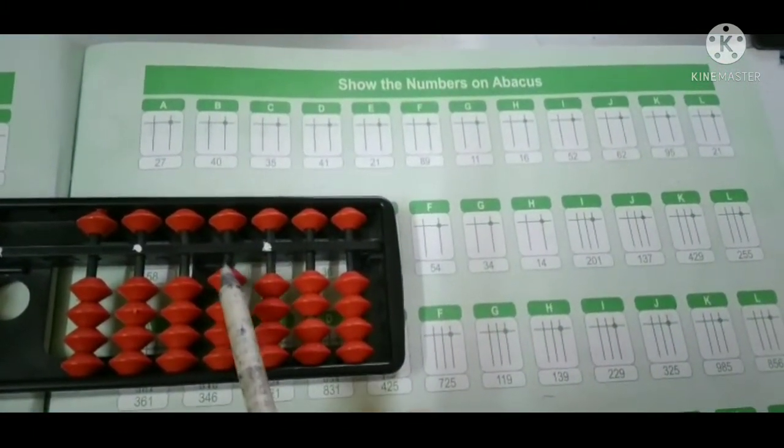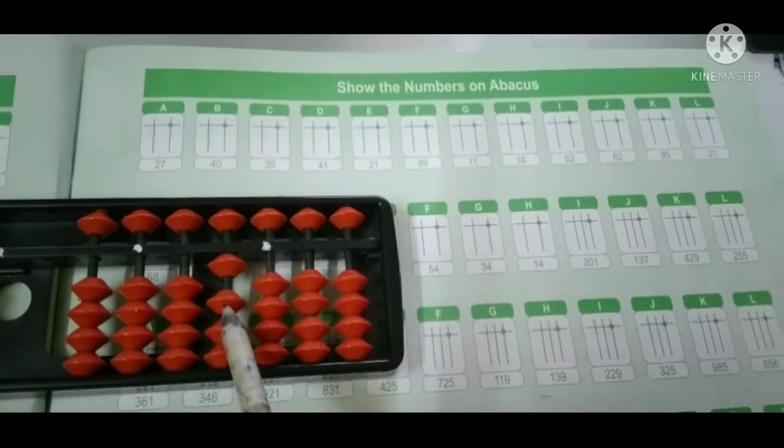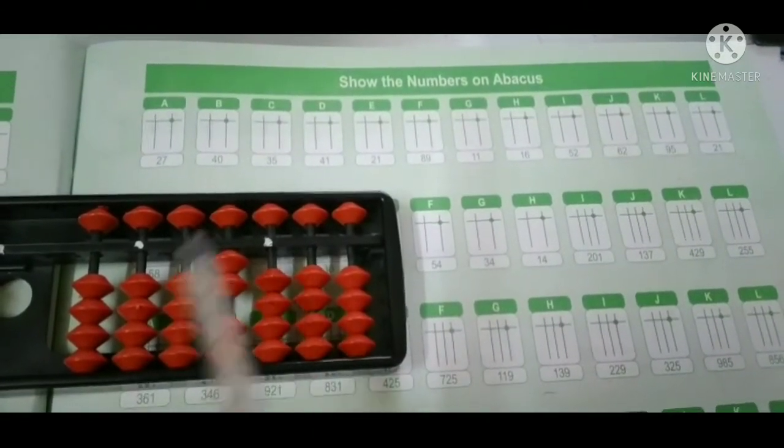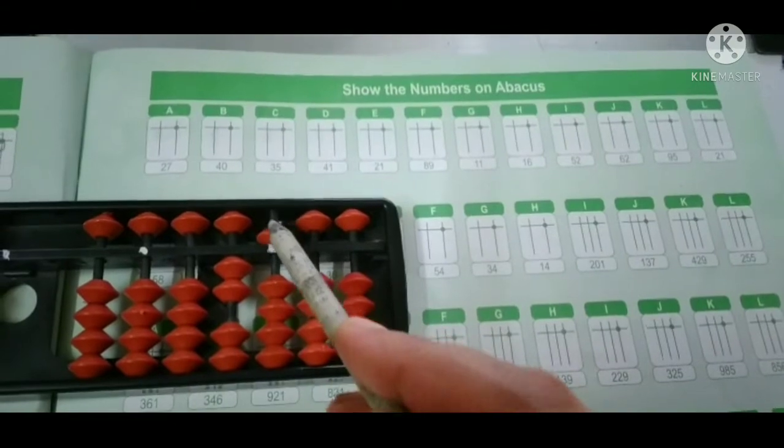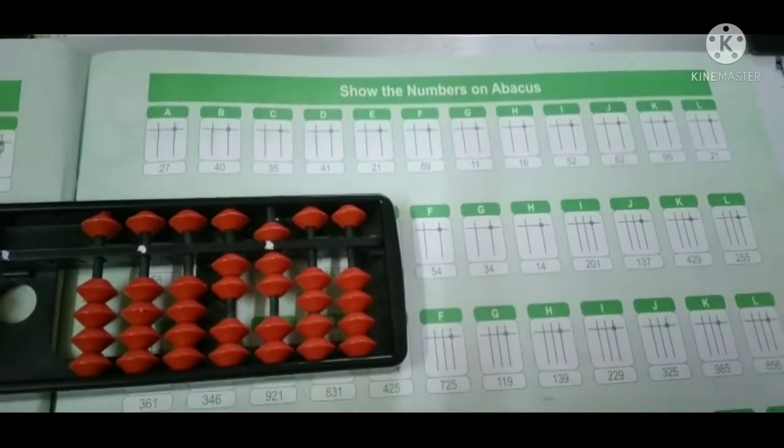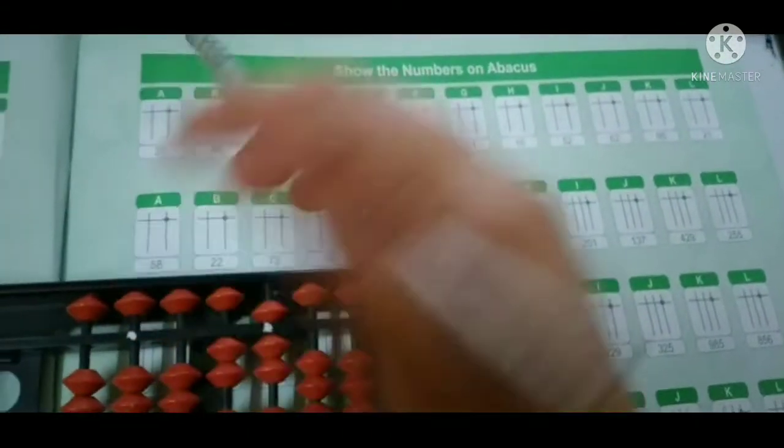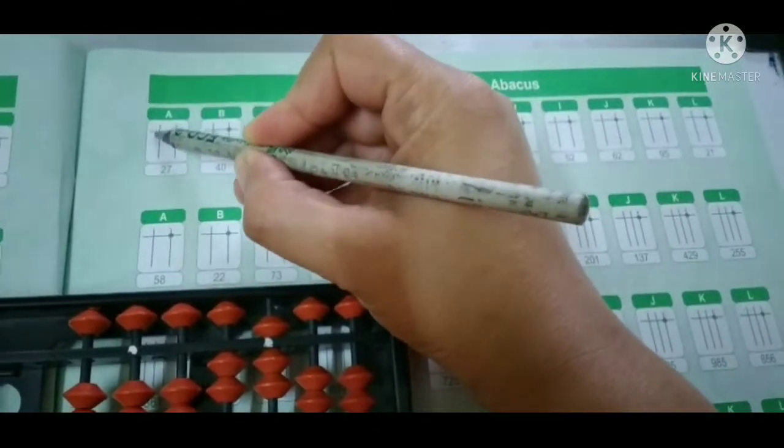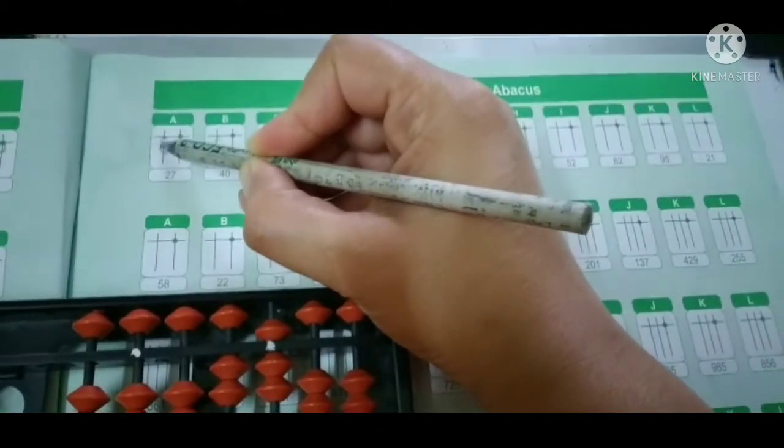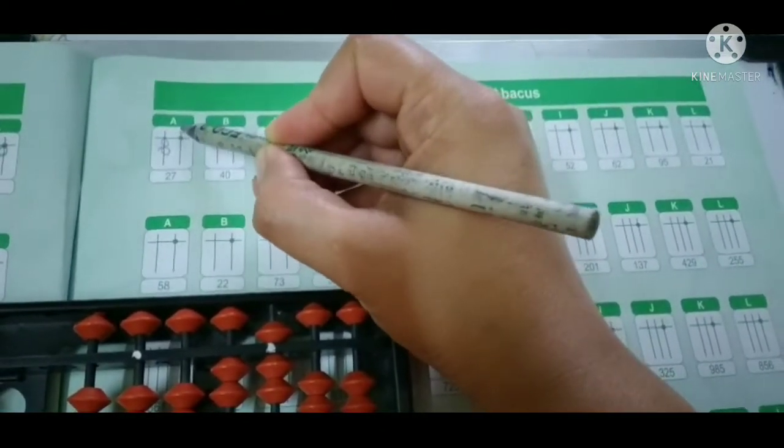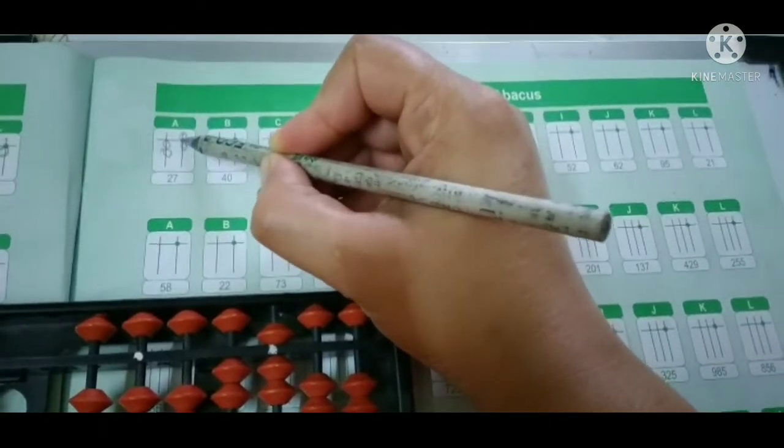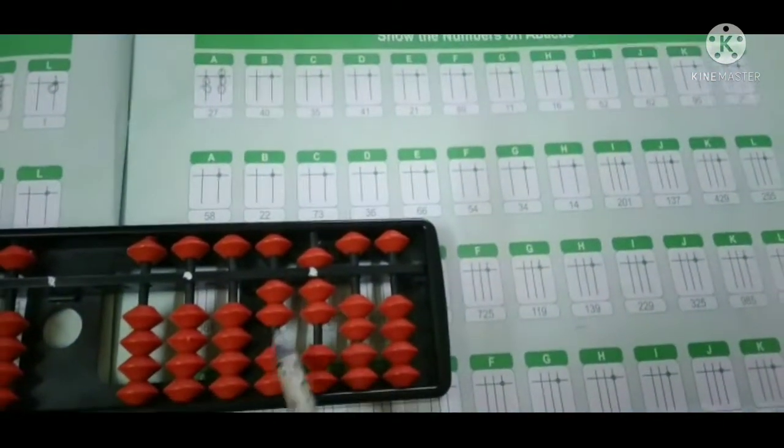This is the tens now, so 10, 20, okay. And then 7: 5, 6, 7. This is 27. Just like this we will draw it here: 1, 2, that means 10, 20. Then 5, 6, 7. When all these touch this rod, then it shows the value.